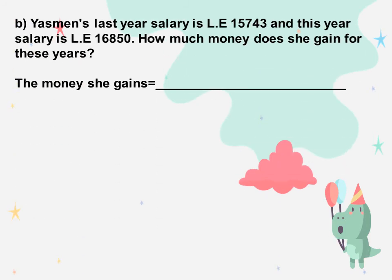The next: Yasmini's last year's salary is 15,743 pounds and this year's salary is 16,850 pounds. How much money does she gain for these two years? The money she gains equals 15,743 plus 16,850. Ones: 3 plus 0 equals 3. 4 plus 5 equals 9. 7 plus 8 equals 15: write 5 and carry up 1. 1 plus 5 equals 6. 6 plus 6 equals 12: write 2 and carry up 1. 1 plus 1 equals 2. 2 plus 1 is 3.